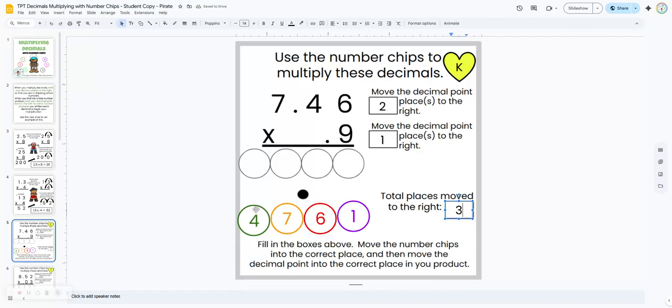Now they're just going to multiply using the number chips. They're going to place them in the correct circles. So here we get six times nine is 54. We're going to carry a five. Nine times four is 36. Add five, 41.